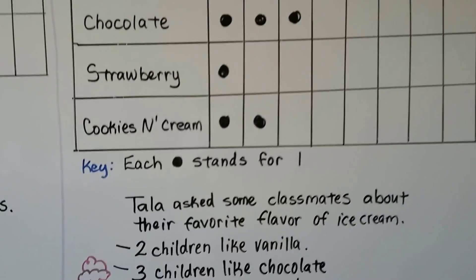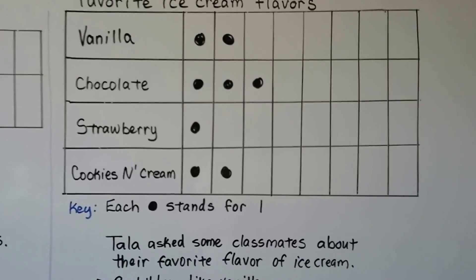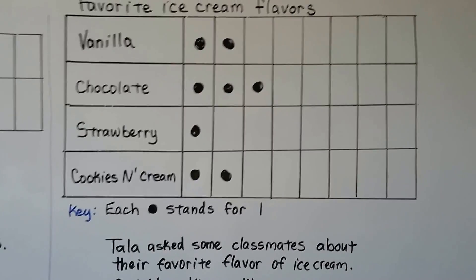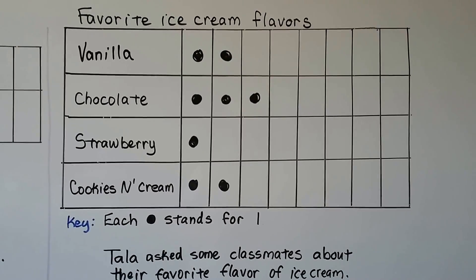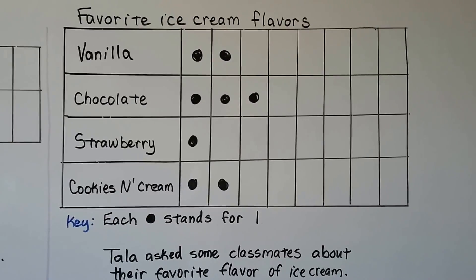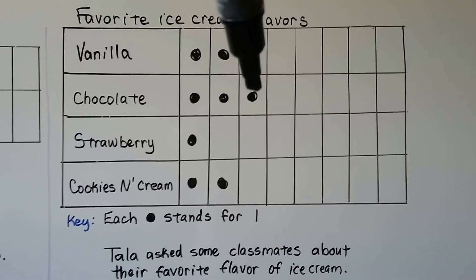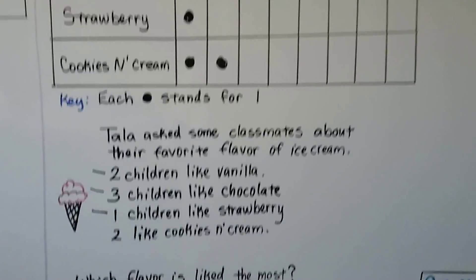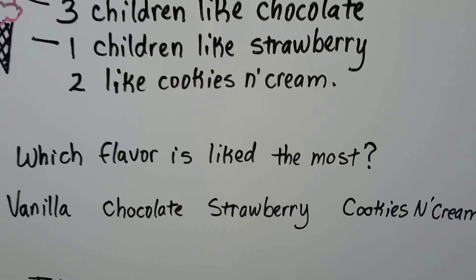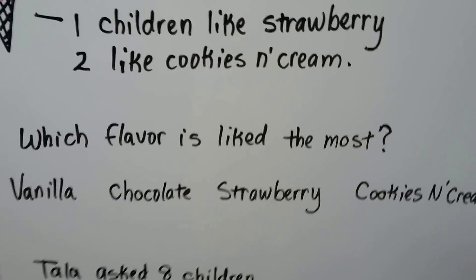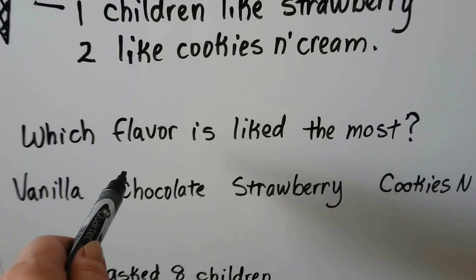So we can look at the picture graph and tell which flavor is liked the most. Can you see it — the one that's sticking out the farthest? It's chocolate. Which flavor is liked the most? Chocolate.